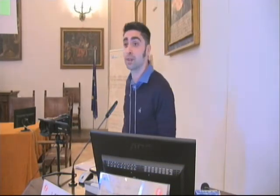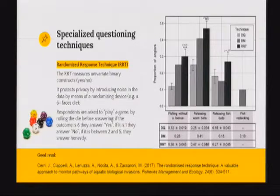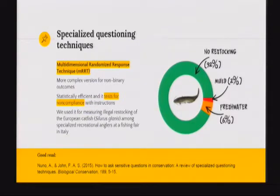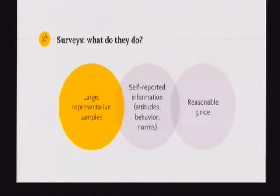We also applied this for two behaviors relevant to biological invasions: releasing invertebrate baits or releasing fish baits. The results were really good. We are now experimenting with more advanced approaches by combining two questions to measure illegal European catfish restocking in the Arno River. It works because respondents are generally confident; statistical models test whether people complied with instructions. In our case, we found that about 8 percent of respondents are actively restocking European catfish.